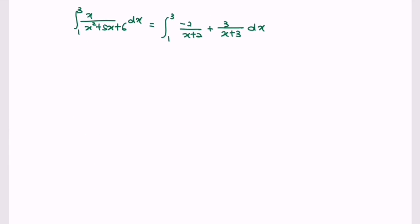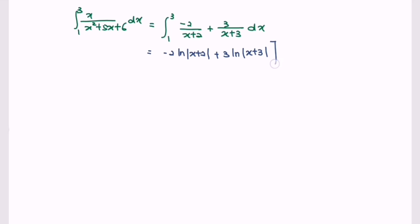Focus on the right-hand side. If we integrate the situation, we will have: negative 2 ln|x plus 2| plus 3 ln|x plus 3|, evaluated with the limit from 1 to 3.